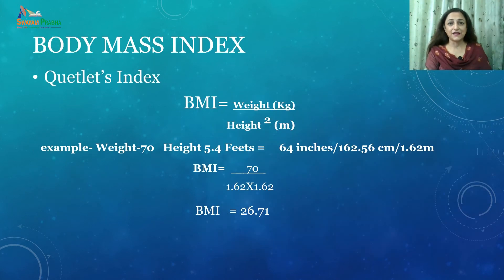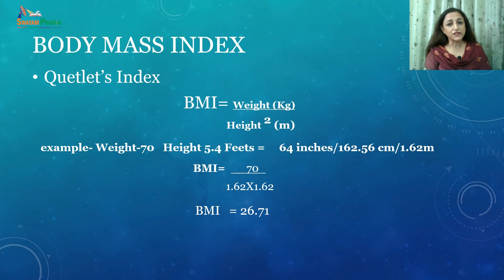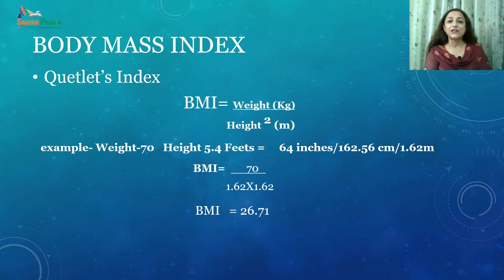Body mass index (BMI) is considered a better estimate of body fatness and health risk than body weight alone. It is also known as Quetelet's index and is a helpful tool for assessing large groups as it correlates with body fat composition. However, it has a limitation: it cannot distinguish between overweight due to obesity and higher BMI due to muscular hypertrophy — for example, athletes will show higher BMI because of greater muscle mass, but BMI cannot distinguish that.